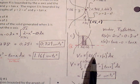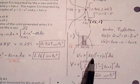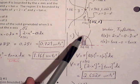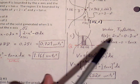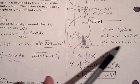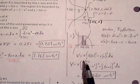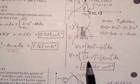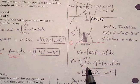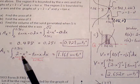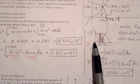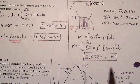Big R extends from the axis to the farther curve, and little r extends from the axis to the inner curve. The formula is pi times big R squared minus little r squared. Big R is 2 minus x cubed minus 0, which is simply 2 minus x cubed. Little r is tangent of x minus 0, which is simply tangent of x. The bounds are again 0 to 0.902, same as part B, since it's the same region — we're just finding the volume now. Plugging into the calculator, we get 2.652 pi cubic units.